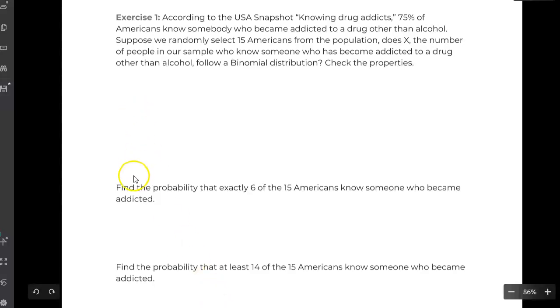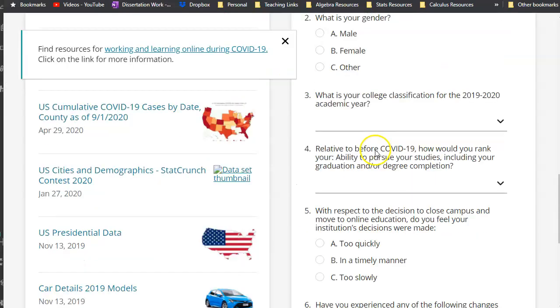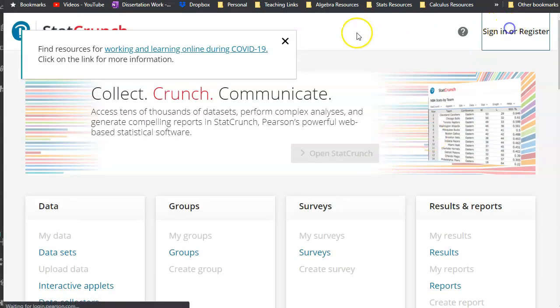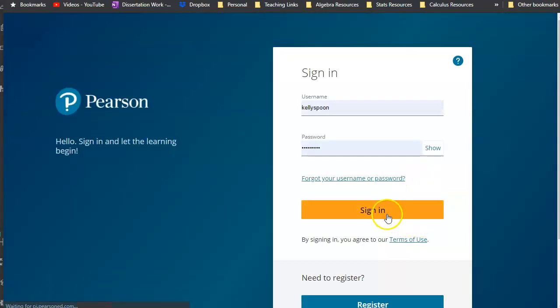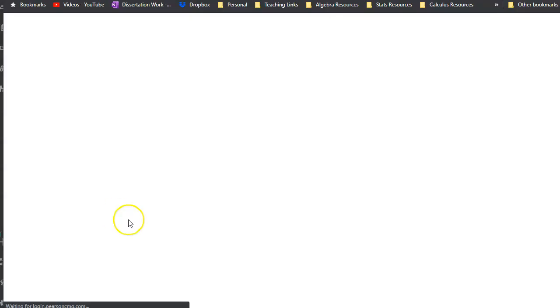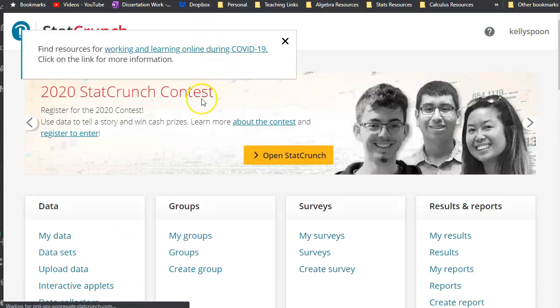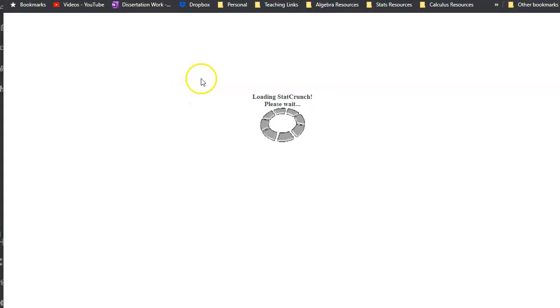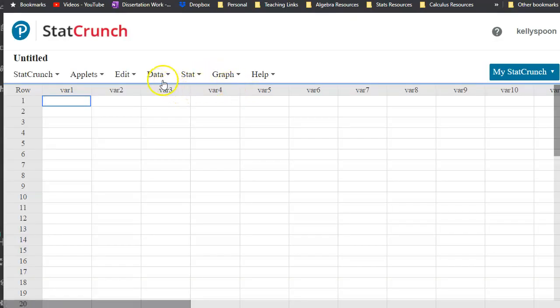Once you have your P and your N and you know that you're dealing with something binomial, we can go to StatCrunch. Sign in with our MESA 119.